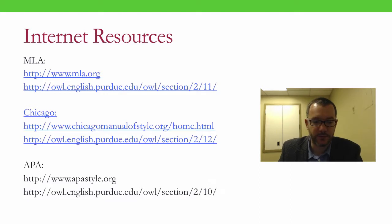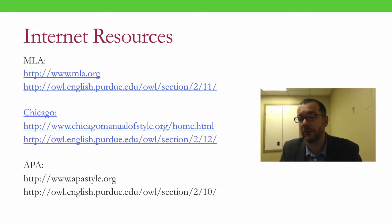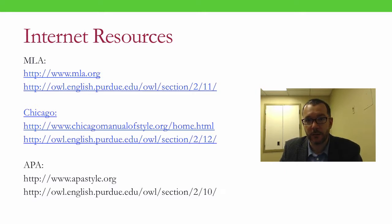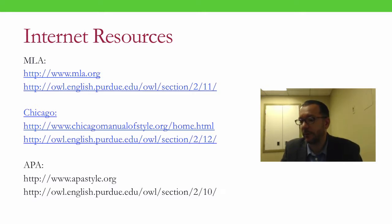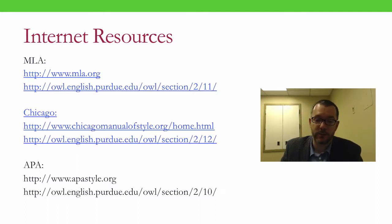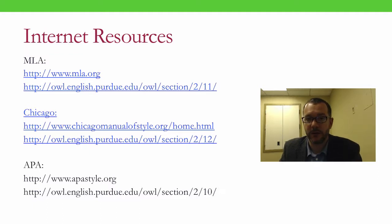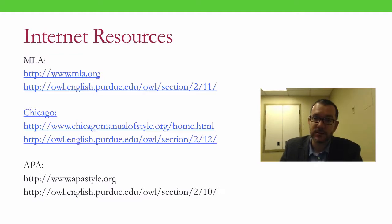Here are some very useful internet resources to consult as you work through the MLA or any other citation system. You'll find the MLA, Chicago, and APA manuals' own sites — that is, mla.org, chicagomanualstyle.org, and apastyle.org — and also links to the Purdue Online Writing Lab's resources on research and citation. Thanks, and see you next time.